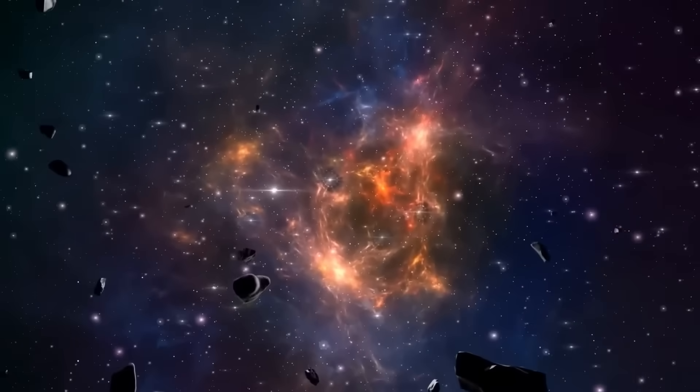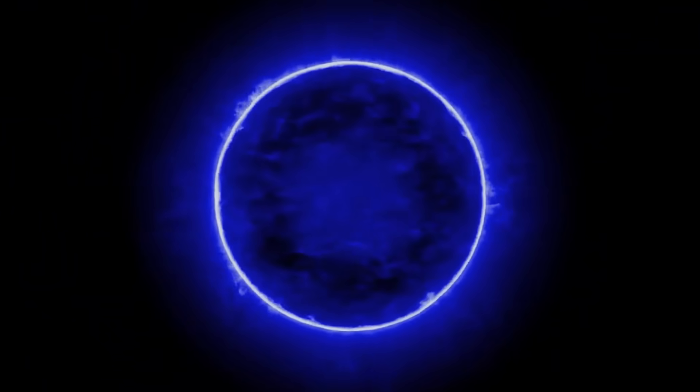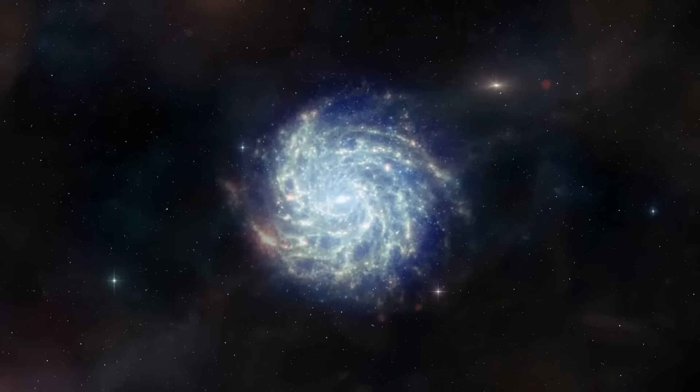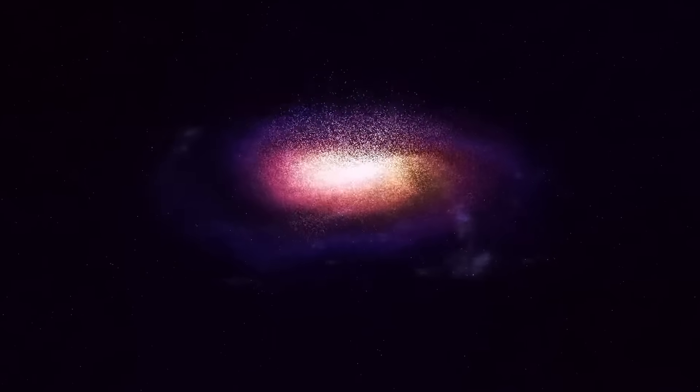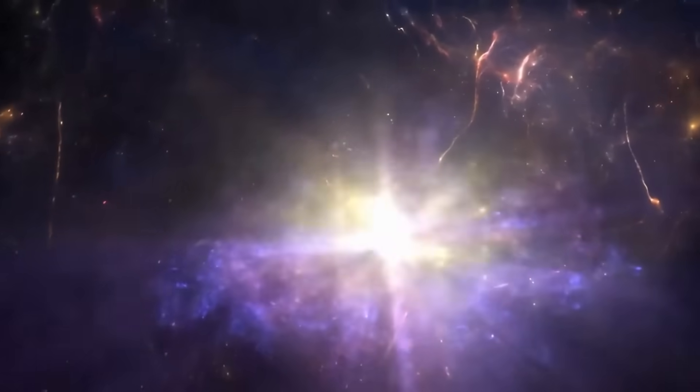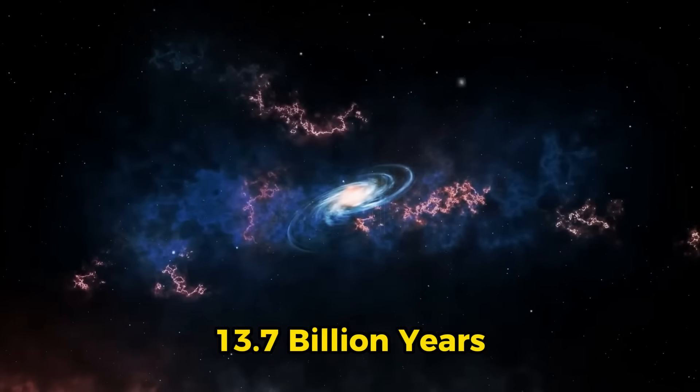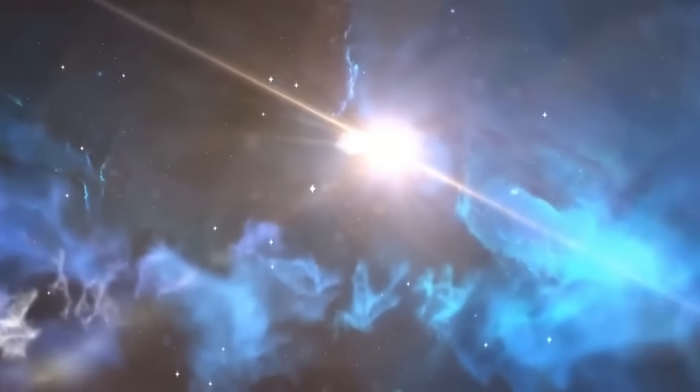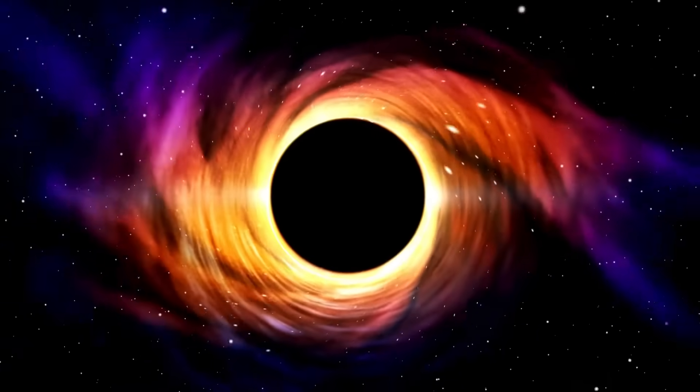In simple words, it says that the whole universe came from a single point with infinite density and heat. Then, this very small point went through an amazing process of expansion. At first, this growth happened at speeds that are hard to imagine. After 13.7 billion years, it slowed down to a more manageable rate. It led to the universe we see today, which is still growing.